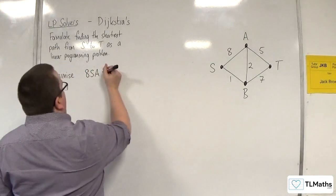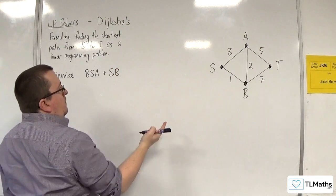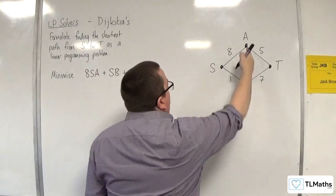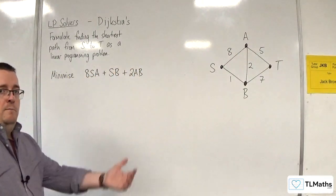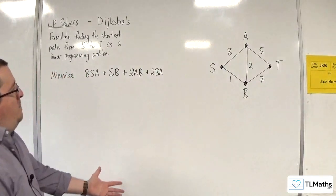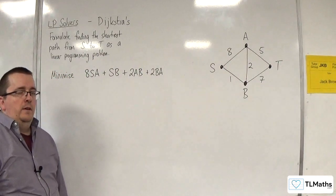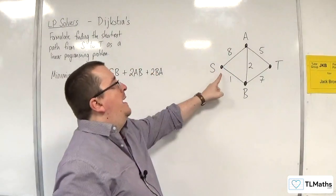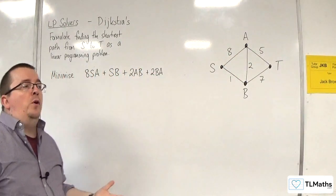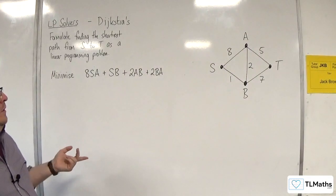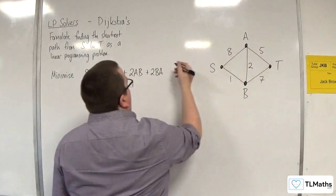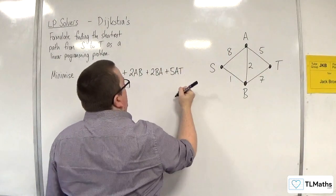Continuing the objective function: I could have 1 lot of S,B. Or 2 lots of A,B. But I could also go from B to A instead, and because there are two possible routes there, I must include them both in my objective function. Now, you might ask why I'm not including A to S — the reason is I'm starting at S, so there's no way I'd ever want to go back from A to S. I've also got 5 lots of A,T and 7 lots of B,T.